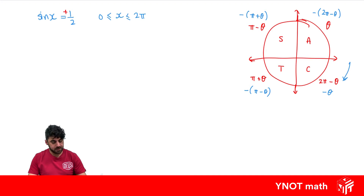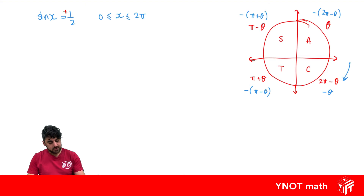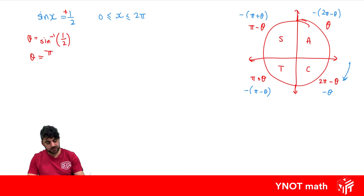So we're expecting answers in the first and second quadrants. We need our base angle theta as referenced in the unit circle diagram. To get that, we just do the inverse sine of a half — we disregard the sign, so if it was negative we'd take the positive version. The inverse sine of a half gives us our base angle theta equal to pi on 6.